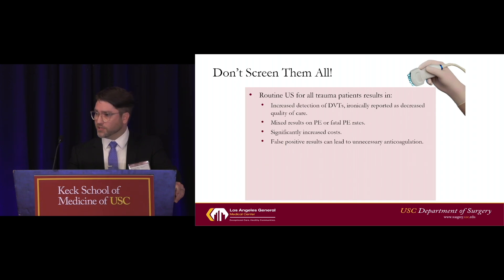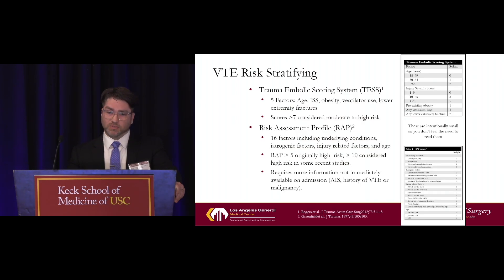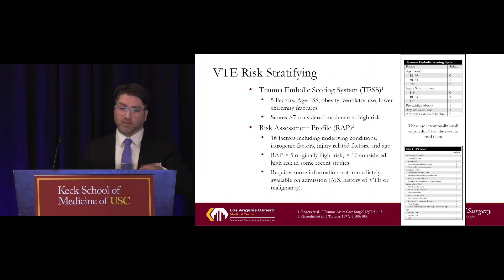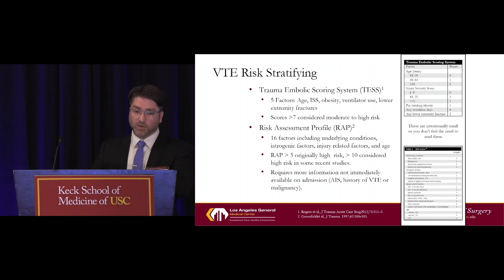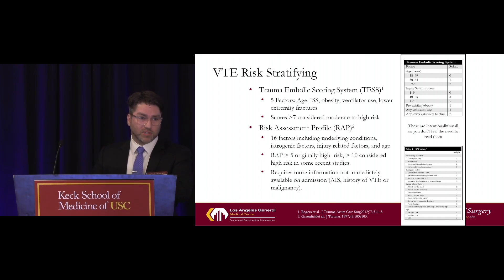The next thought was maybe we should just screen high-risk patients — somehow select which trauma patients are even higher risk than others, screen only them, have lower costs, and maybe a higher yield. There are a couple of specific scoring systems. Dr. McKeever mentioned the Caprini score, which is a great VTE risk system but doesn't apply specifically to trauma patients. So the Trauma Embolic Scoring System, or TESS, is relatively easy to use — there are only five factors: age, ISS, obesity, ventilator use, and lower extremity fractures — and showed some promise.